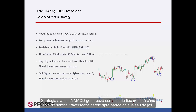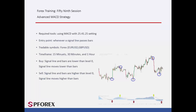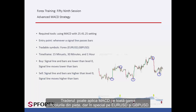Advanced MACD generates signals whenever the signal line crosses the bars towards the top or bottom. A trader can apply Advanced MACD on all symbols with range markets, especially on EUR against USD and GBP against USD.